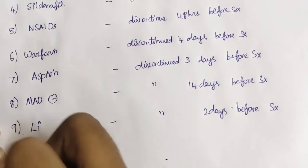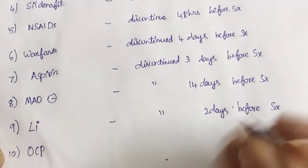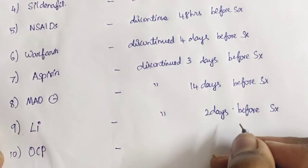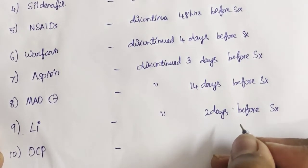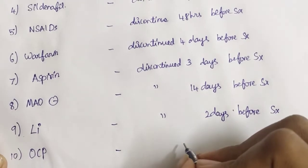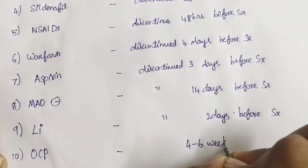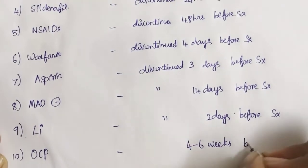What if she is taking oral contraceptive pill? A female patient coming and gives a history that she is taking oral contraceptive pills and she has to do an elective surgery. Then, you should advise her to discontinue OCP for about four to six weeks. Yes, it is not days, four to six weeks before surgery.